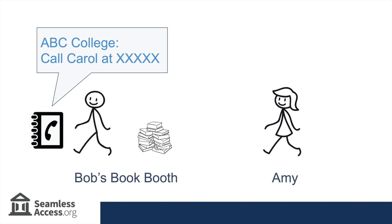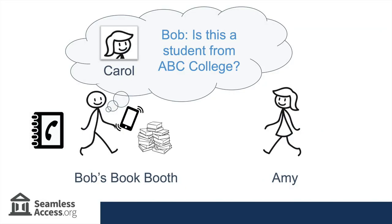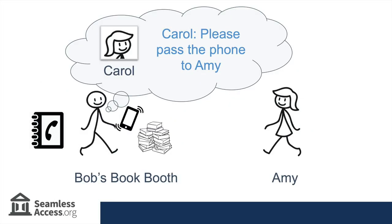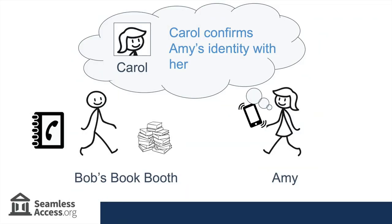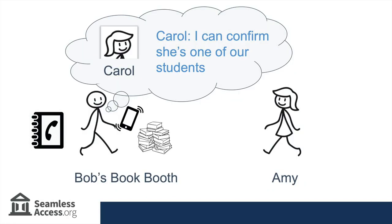Luckily, he has a phone book where he can look up someone who can help him. In the case of ABC College, the person to talk to is Carol. Bob calls Carol to ask if she can confirm that the person at his booth is a student at ABC College. Carol asks Bob to pass the phone to the student so she can talk to her directly. Carol talks to Amy and is able to confirm that she's a valid student at ABC College. Amy passes the phone back to Bob so that Carol can confirm to him that she's a student at ABC College.